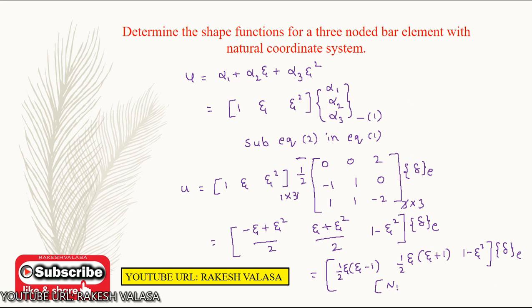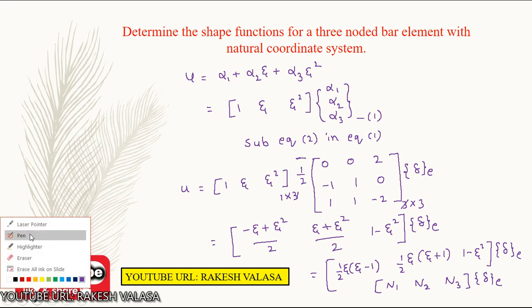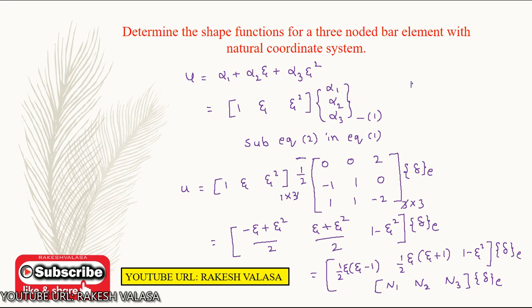We can write this as [N1, N2, N3] times delta_e, where N1 equals (1/2)·zeta·(zeta minus 1), N2 equals (1/2)·zeta·(zeta plus 1), and N3 equals (1 minus zeta squared). These are the shape functions for a 3-noded bar element with natural coordinate system.